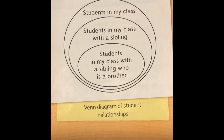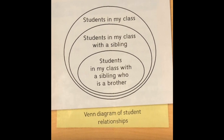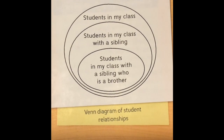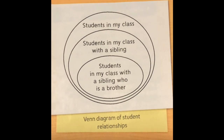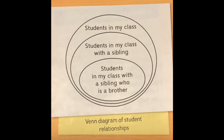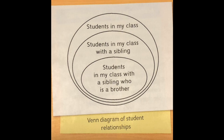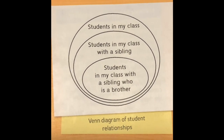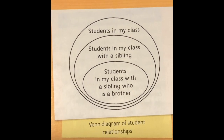So students in my class is a category of students. All the students in the category share an attribute — that they are members of my class. When I added the attribute of having a sibling, the students in that group formed a subcategory. They are still members of the larger category because they're still in my class, but they also have an additional attribute that they have a sibling.